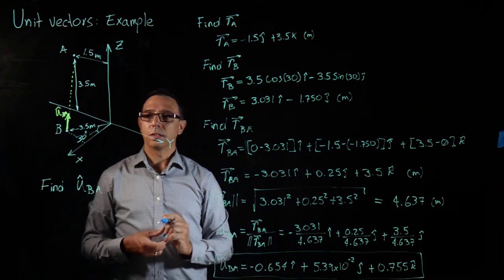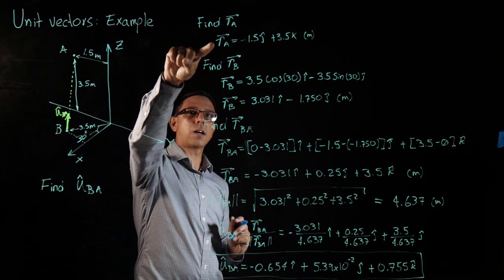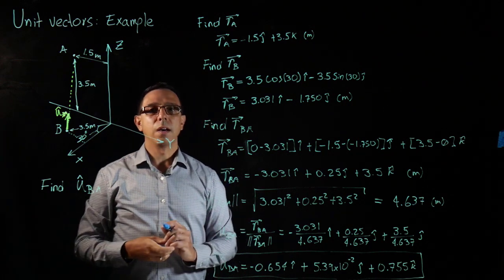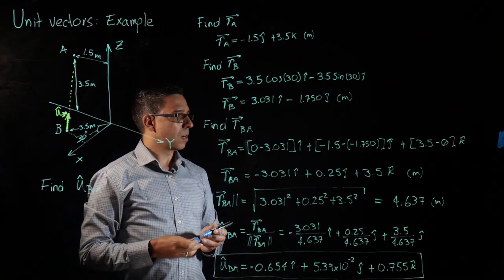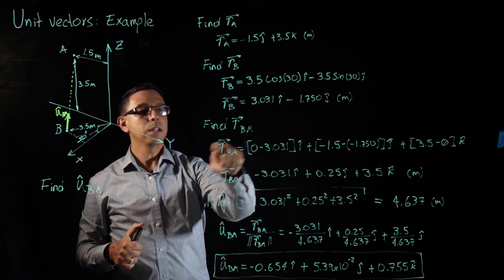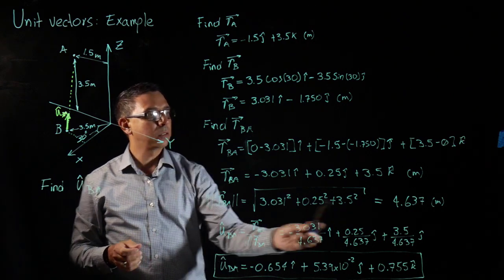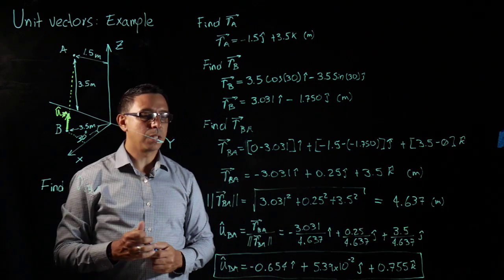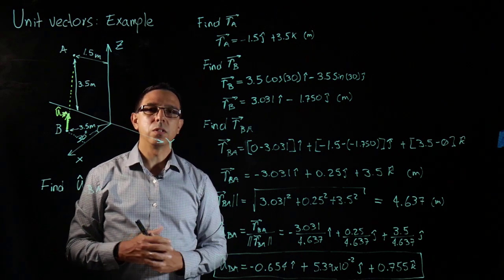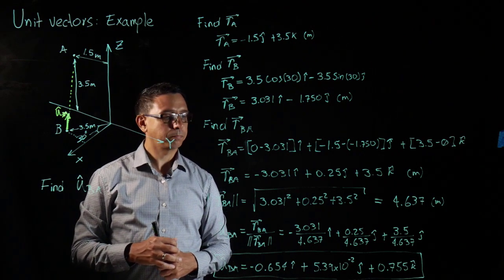So to summarize, I got my position vectors to the points A and B, R_A and R_B. And then found my position vector B A, which is in this part over here. And then finally I found the magnitude of my position vector B A and found my unit vector by dividing that R_BA divided by that magnitude. Thank you.